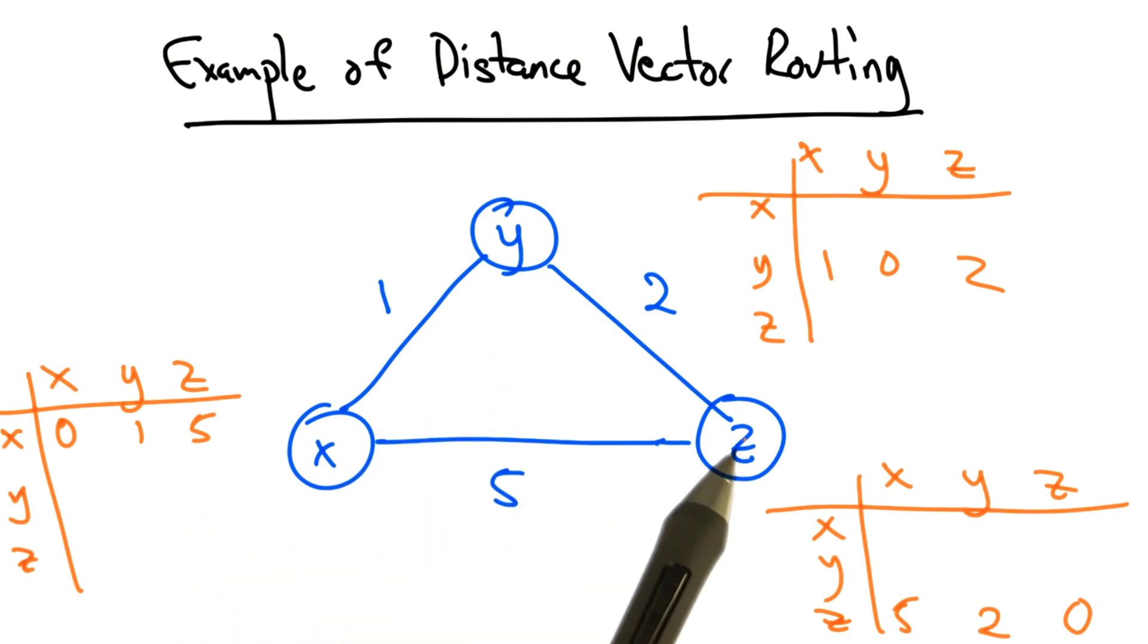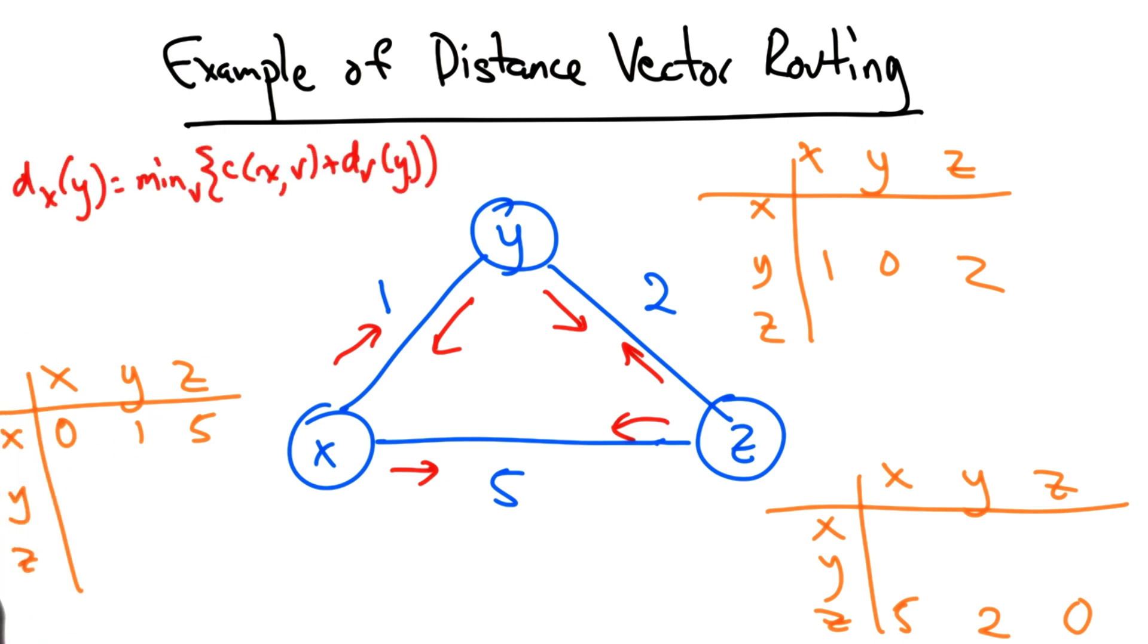Note that a shorter path between x and z exists via y, but x simply doesn't know about it yet. Now, in distance vector routing, every node sends its vectors to every other adjacent node, and each node then updates its routing table according to the Bellman-Ford equation.